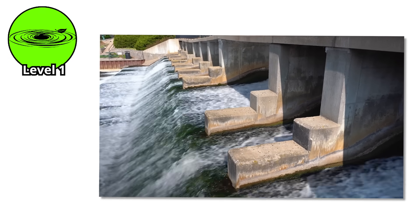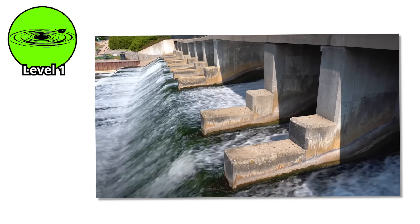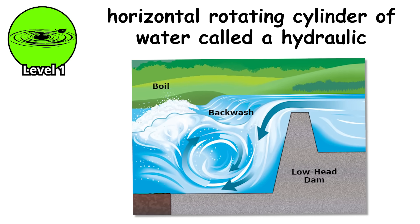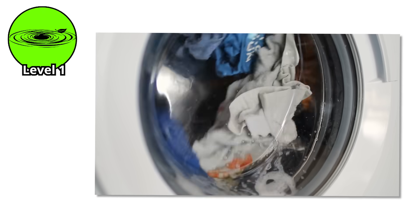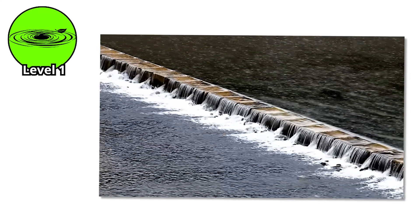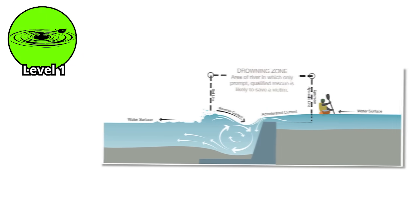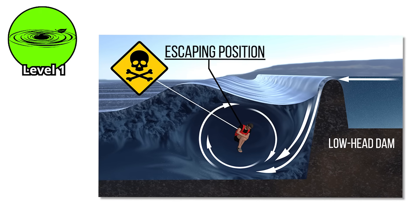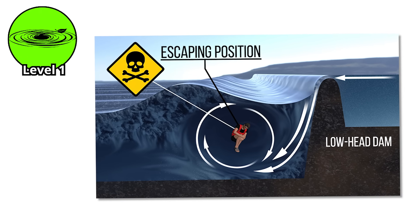As water flows over the dam, it plunges downward and then curls back on itself, creating a horizontal rotating cylinder of water called a hydraulic. It works like a washing machine cycle that never ends. The surface current flows back upstream toward the dam, while the underwater current flows downstream. Anything caught in this zone gets tumbled, violently and continuously, unable to escape.